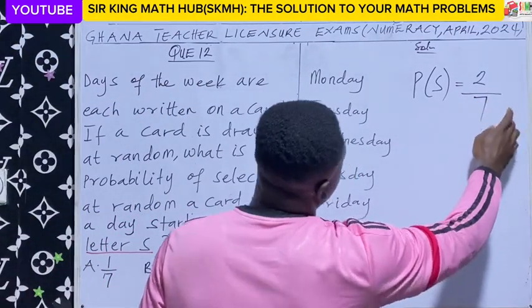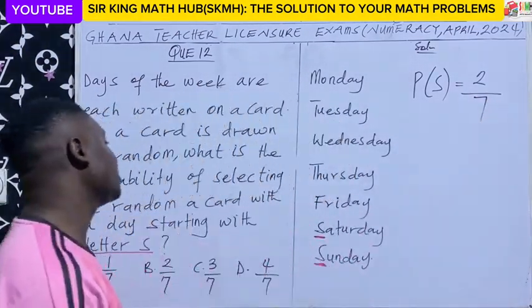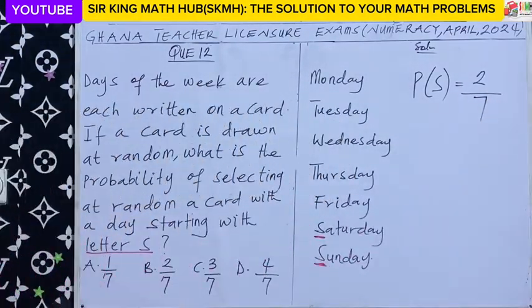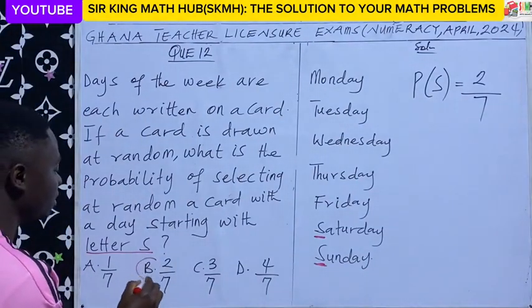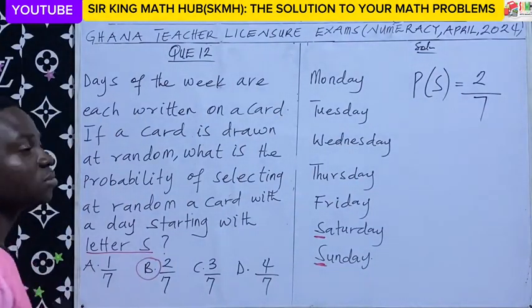So how many of the days are out of seven? Looking at the alternatives, the right answer is option B.